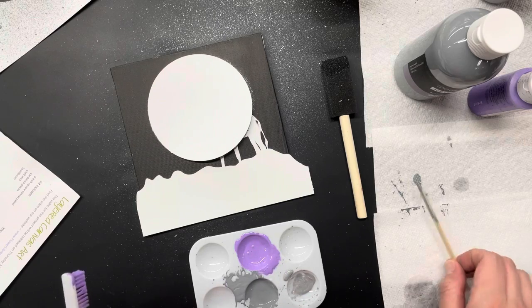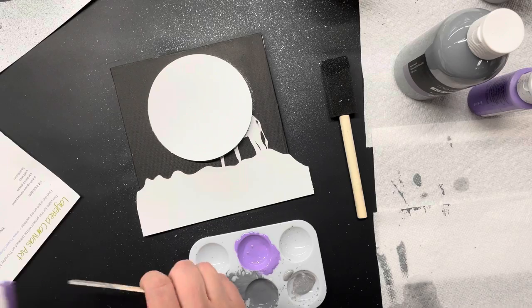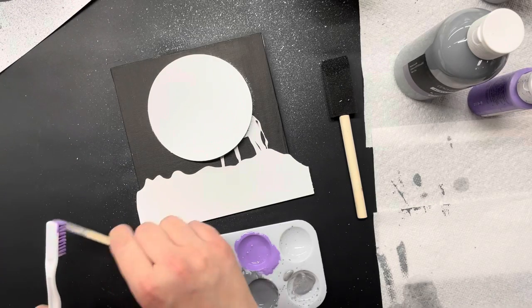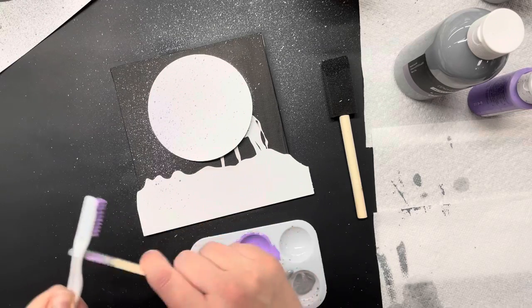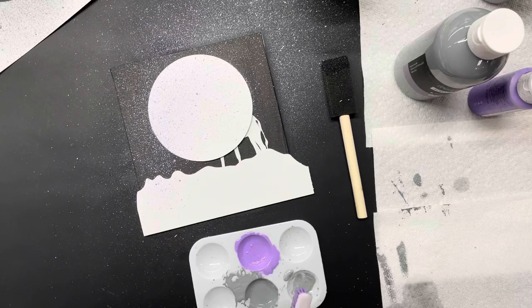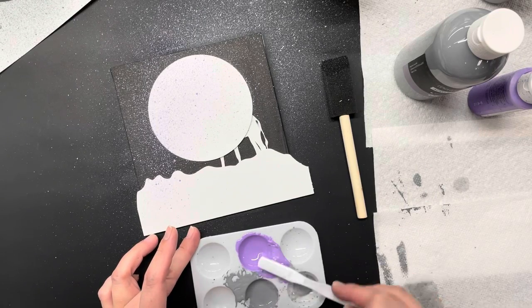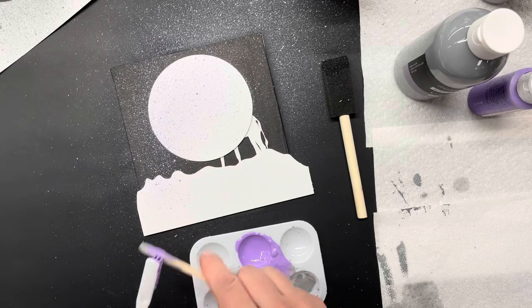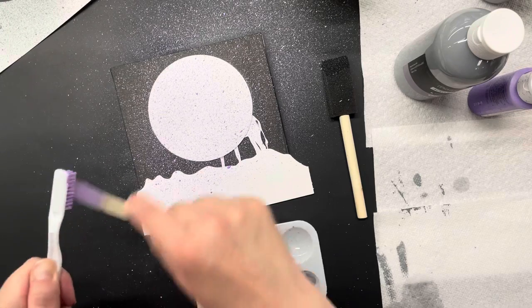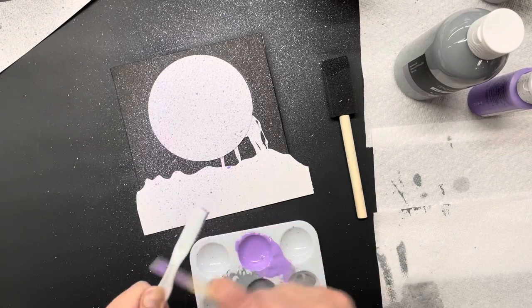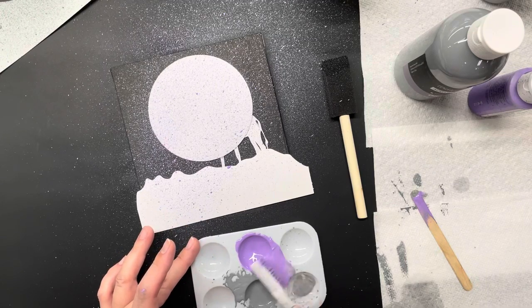I'm just kind of tapping the paint so it's not too loaded on there. Giving my craft stick a quick clean off. Doing a little test spray again and then moving on in to my background. And just keep filling until you're satisfied with the pattern that you've achieved and your coverage.